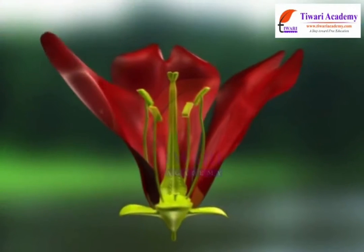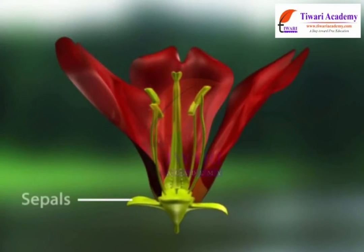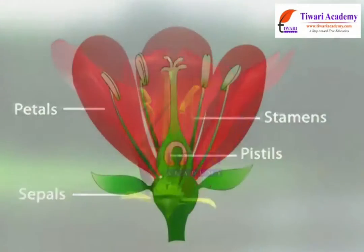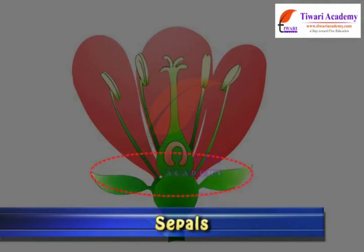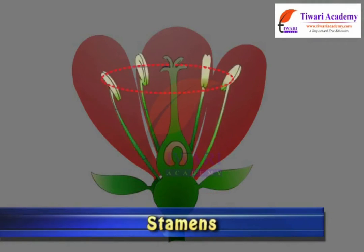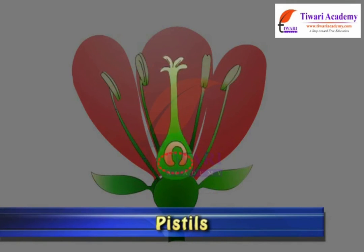A flower has four basic whorls: sepals, petals, stamens, and pistils.